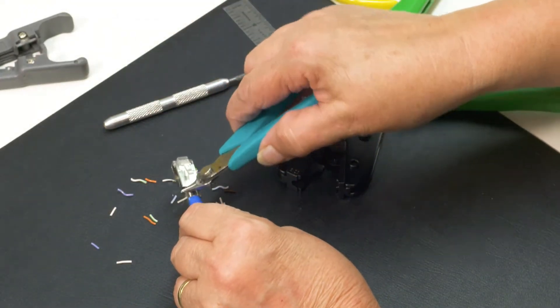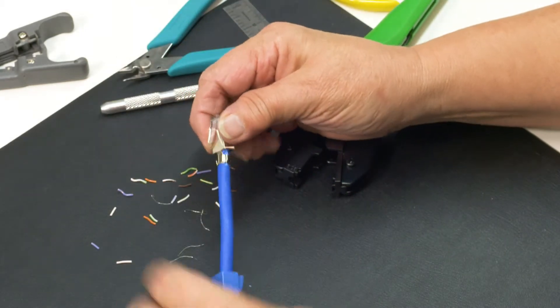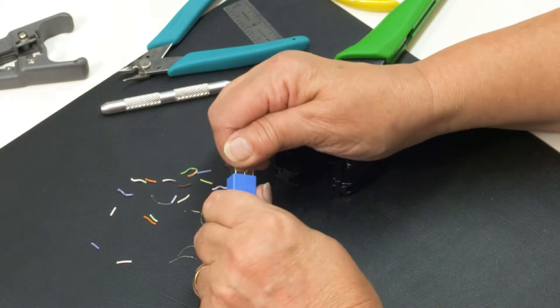Trim any excess drain wire for a neat appearance. Last step, pull boot up over the connector.